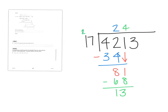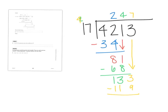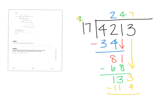So now I've got 13. What do I do? Bring down the 3. And then 17 goes into 133 how many times? A lot — that's a good answer. I think it's 7 times. 7 times 7 is 49, carry the 4. 7 times 1 is 7, plus 4 is 11. And what's 133 minus 119? 14.